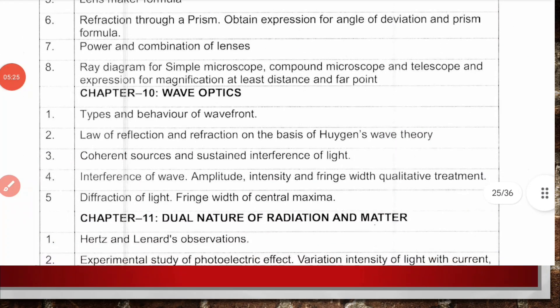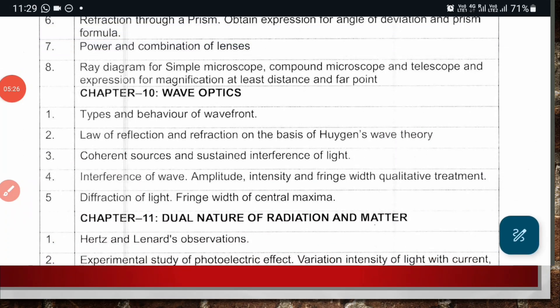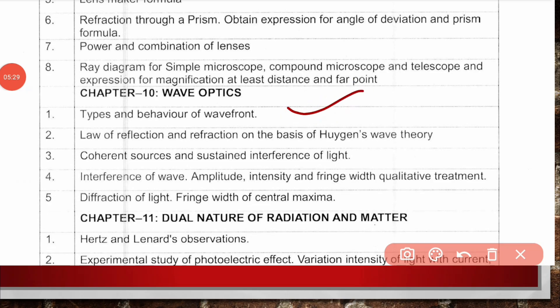Chapter 10, Wave Optics: types and behavior of wavefront, law of reflection and refraction on basis of Huygens wave theory, coherent sources and sustained interference of light, interference of waves covering amplitude, intensity and fringe width with qualitative treatment, diffraction of light with fringe width of central maximum, and numericals on this topic which are important.